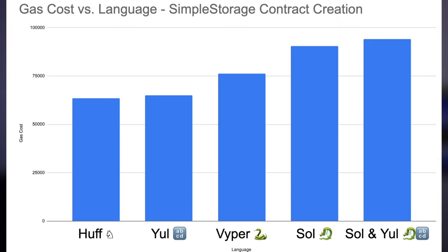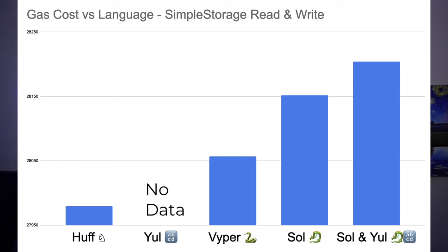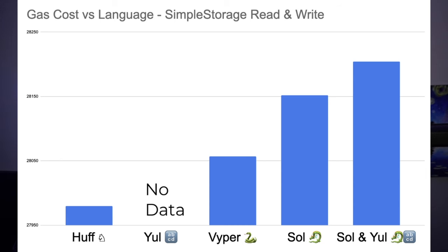Before we understand the differences in contract creation code, let's look at the runtime differences. We're measuring how much it costs to store and read a number from our contracts. We didn't have data for Yule because I didn't feel like making a Yule Foundry plugin, but the gas costs there are probably similar to Huff. Keep in mind the gas costs here are running a whole testing function, which is why the numbers seem higher than they probably actually are. But we can still see a major difference in gas between these languages.